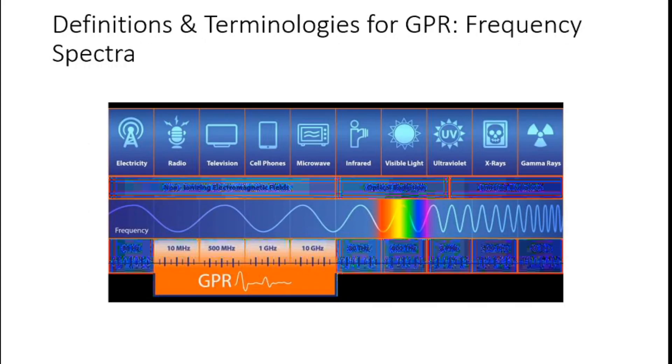Here is the frequency spectra. Starting from the left to the right you can see electricity, radio, television, cell phone, microwave, infrared up to gamma rays. All these vary according to their frequency and their wavelength, but we are considering only this orange segment here which is responsible for the GPR investigations. It starts from around one megahertz or five megahertz to up to 10 gigahertz. Usually we use a different kind of frequency for different kind of application domain because all application depends on what kind of depth is required.